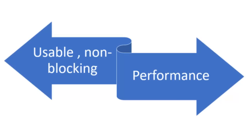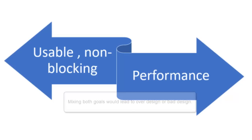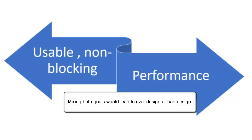The goal of Concurrency is to have a non-blocking application — a usable application. Your application should not hang. For example, if something is running in the background, it should not affect how the end user is using your application. It is about making your application usable, not about performance. You do not intend to make your application faster. The goal of Parallelism is performance — you want to complete tasks as fast as possible, utilize your hardware, and go as fast as possible. One is about making your application usable and non-blocking; the other is all about performance.